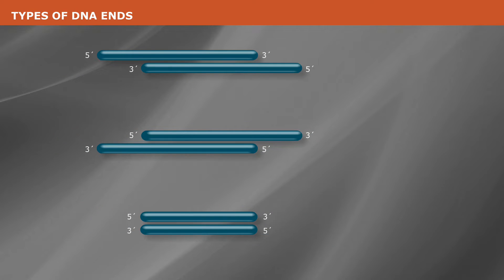When planning to blunt the ends of your DNA fragment, you'll need to determine what types of ends your DNA fragment has: a 5' overhang, a 3' overhang, or blunt.